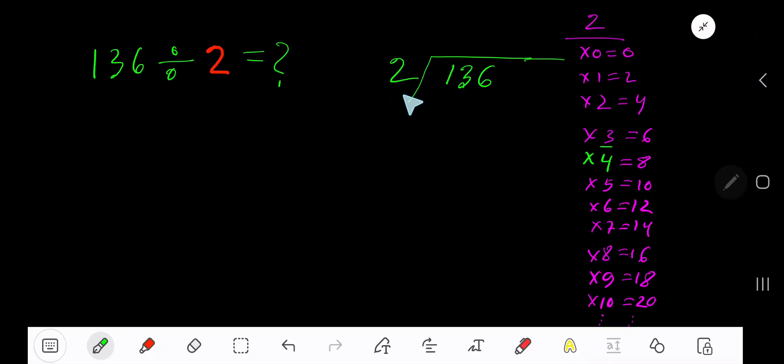136 divided by 2. Here 2 is the divisor, so we need the multiplication table of 2. 2 times 0 is 0, 2 times 1 is 2, 2 times 2 is 4, 2 times 3 is 6, 2 times 4 is 8, 2 times 5 is 10, 2 times 6 is 12.